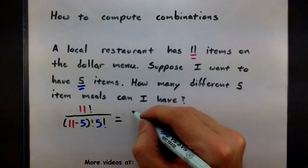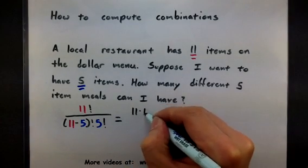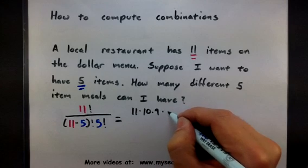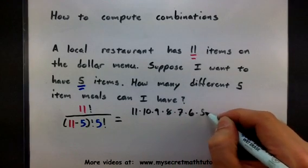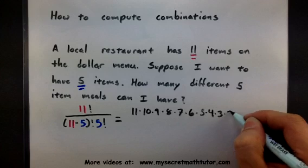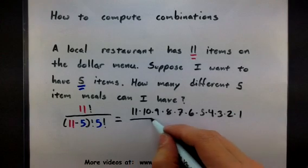Let's do that and see what we get. So on top, 11 times 10 times 9 times 8, 7, 6, 5, 4, 3, 2, 1. Lots of stuff, alright?